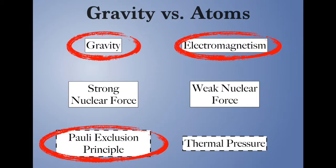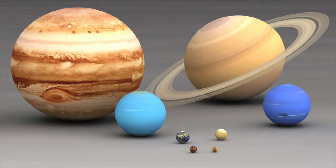If the thing holding something up against gravity is just the ordinary hardness of matter, you've got a planet. A planet is held up by atomic forces but is so big that gravity has molded it into a sphere. Any big enough mountain gets pulled into a spherical shape — that's what a planet is.